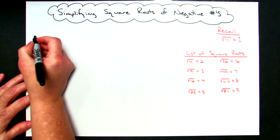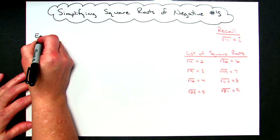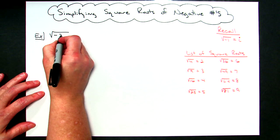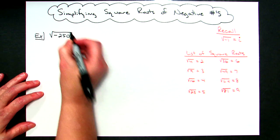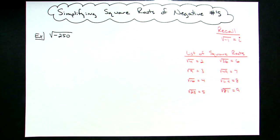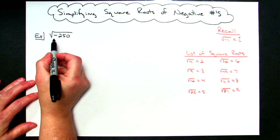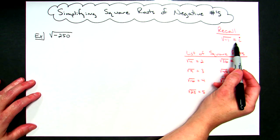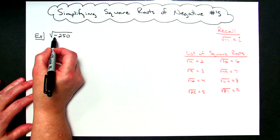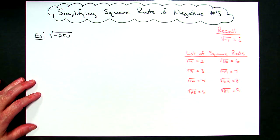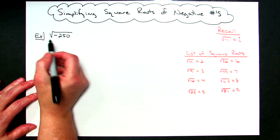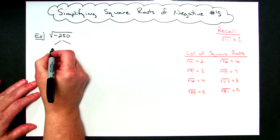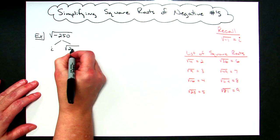To start with, let's simplify the square root of negative 250. The first step is you want to get rid of the negative. We know that the square root of negative 1 is i, so we can take the square root of negative 1, get rid of the negative sign underneath, and pull an i out in front. So we break this up into i times the square root of 250.